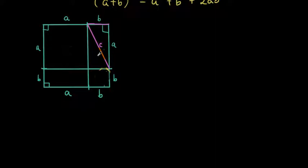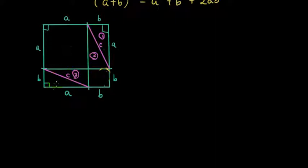I'm going to do that on all four corners of the square. What I have done is created four right angle triangles — one here, another here, another here, and another here — where A and B are the two shorter sides and C is the longest side. So I have four right angle triangles.